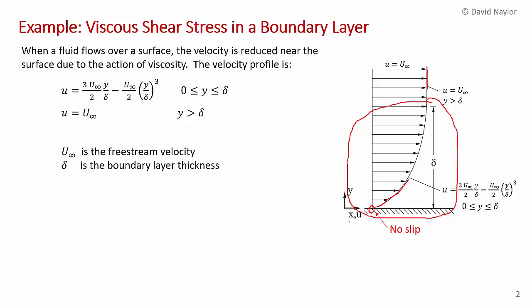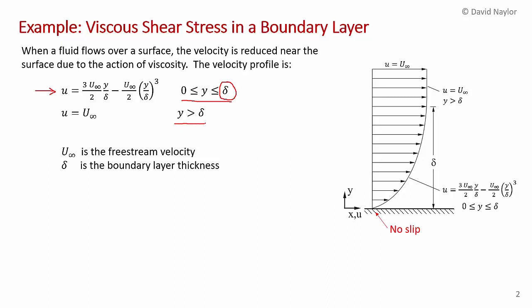In this problem, we have the x-coordinate, the u-component of velocity, and y is the coordinate normal to the surface. The velocity profile in the x-direction is: u = (3/2) u∞ (y/δ) − (u∞/2)(y/δ)³. This applies from y = 0 up to the edge of the boundary layer. Delta (δ) is the boundary layer thickness — the region where fluid is slowed down. Beyond y = δ, we have u equal to the free stream velocity u∞.